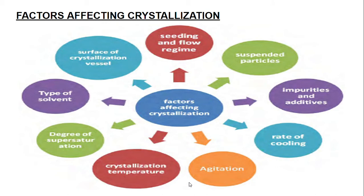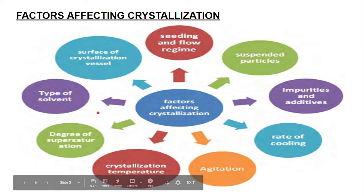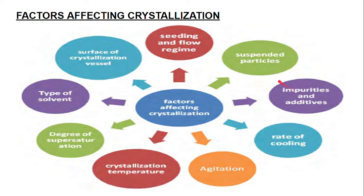In the introduction video of crystallization, I highlighted that the crystallization process is one in which solids are converted into the crystalline form, which has a number of advantages. This slide highlights the different factors affecting the entire process. We can classify them into nine types — some of these factors are interrelated with one another. The factors are: type of solvent, degree of supersaturation, crystallization temperature, agitation speed, rate of cooling, impurities and additives, suspended particles, seeding, and the flow regime as well as the surface of the crystallization vessel.